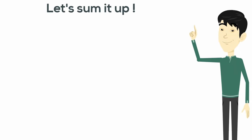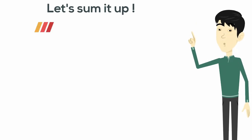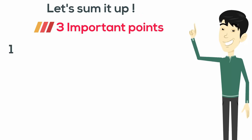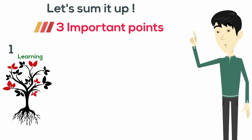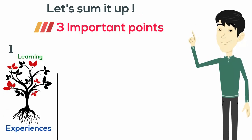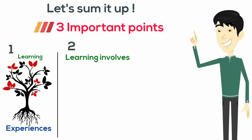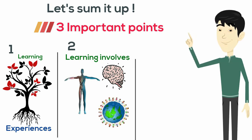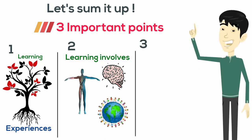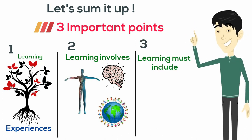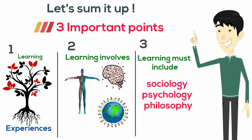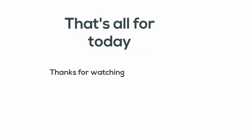To sum up, there are three important points that Jarvis's definition includes, making it a very comprehensive theory of learning. First, at the root of every learning lies experience. Second, learning involves the body, the mind, and the social environment. And third, theories of learning must include many academic disciplines such as sociology, psychology, and philosophy. So that's it for today — thanks for watching.